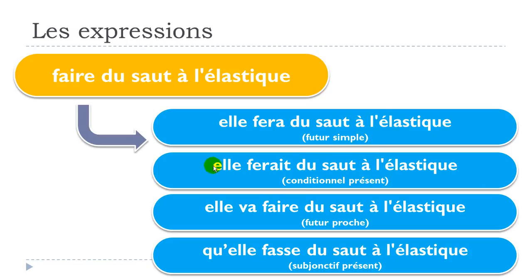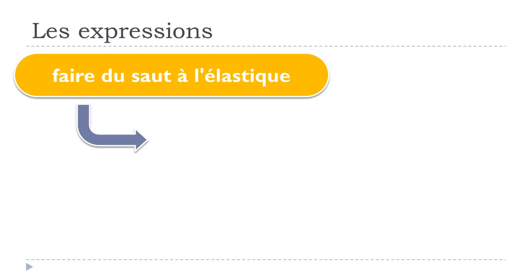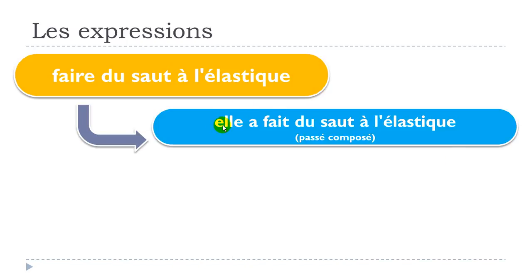So to clarify: elle fera du saut à l'élastique is future simple. Elle ferait du saut à l'élastique is le conditionnel présent. Elle va faire du saut à l'élastique is futur proche. And qu'elle fasse du saut à l'élastique is subjonctif présent. Now let's look at the past tenses: elle a fait du saut à l'élastique, which is passé composé.